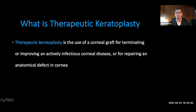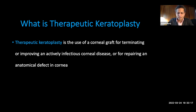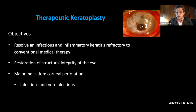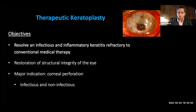So what is therapeutic keratoplasty? By definition, it is the use of a corneal graft for terminating or improving an actively infectious corneal disease, or for repairing an anatomical defect in the cornea — which is probably a fancy way to say corneal perforation. The objectives of therapeutic keratoplasty are to resolve an infectious and inflammatory keratitis which is refractory to conventional medical therapy, and also to restore the structural integrity of the eye.